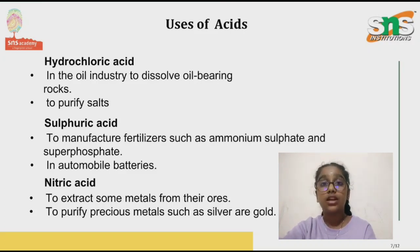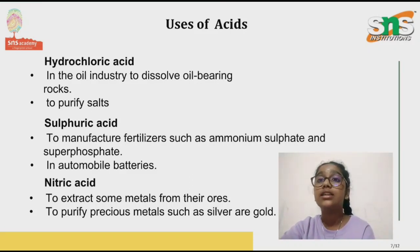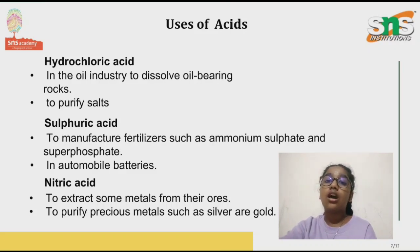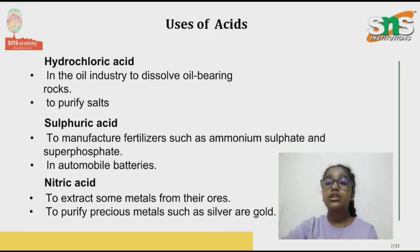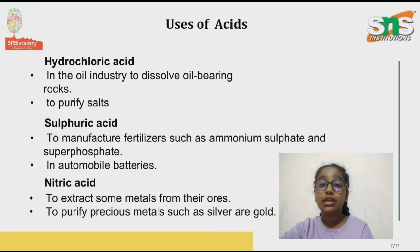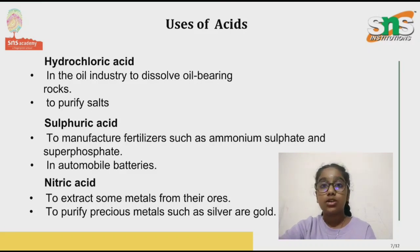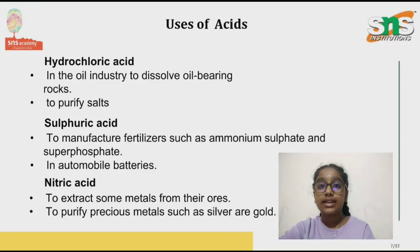Sulfuric acid is the most widely used acid in several industries. Its uses include manufacturing detergents, plastics, paints and more. It is used in automobile batteries, and it is also used to manufacture several chemicals such as copper sulfate and Epsom salts. Additionally, it is used in the paper, leather and textiles industries.